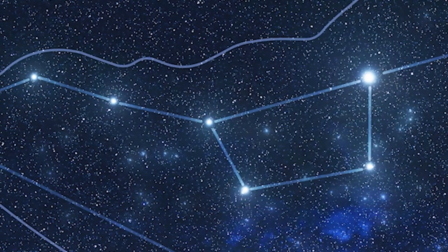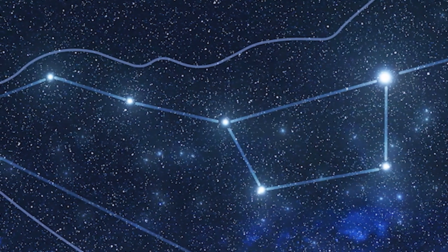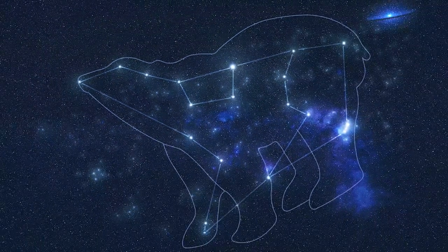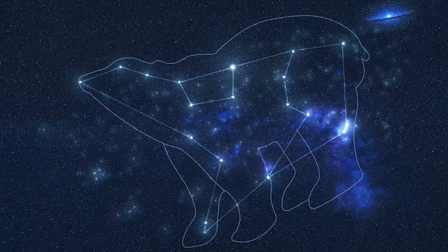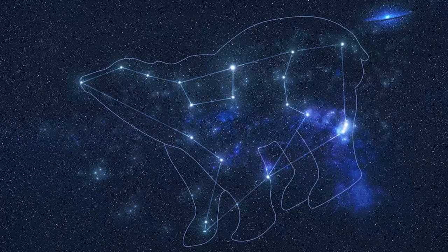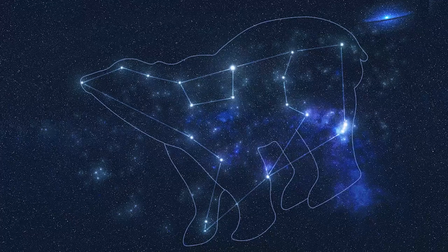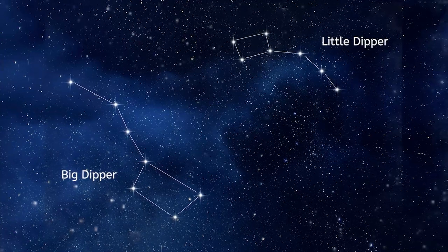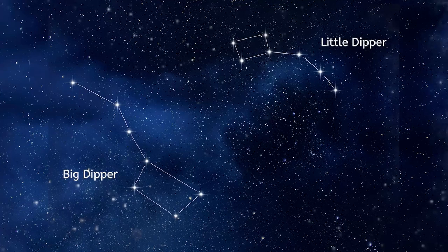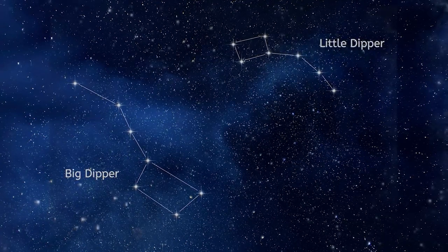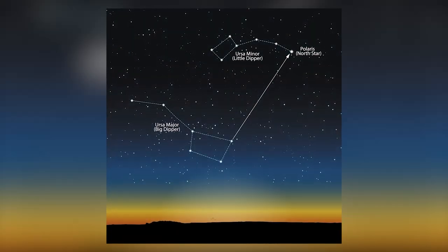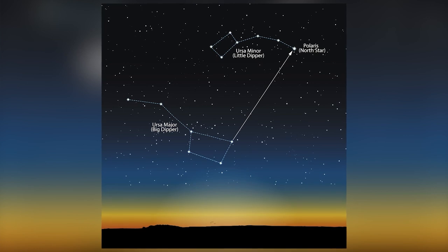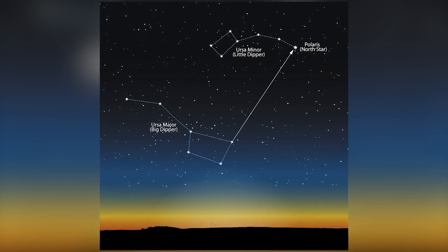The Big Dipper is this ladle-shaped asterism that you've likely seen many times in the night sky. But did you know that it is part of the constellation Ursa Major, or the Great Bear? The Big Dipper contains seven stars, while Ursa Major contains 22. Ursa Major is often associated with the Greek legend of Callisto, who was turned into a bear by Zeus. Ursa Major is mirrored by another constellation called Ursa Minor, or Lesser Bear. Ursa Minor contains the Little Dipper asterism, and the Little Dipper contains the North Star Polaris at its tail. These two constellations were very commonly used for navigating for thousands of years due to their consistent location in the night sky. And the cup portion of the Big Dipper points directly to the North Star, so you can always spot it easily.